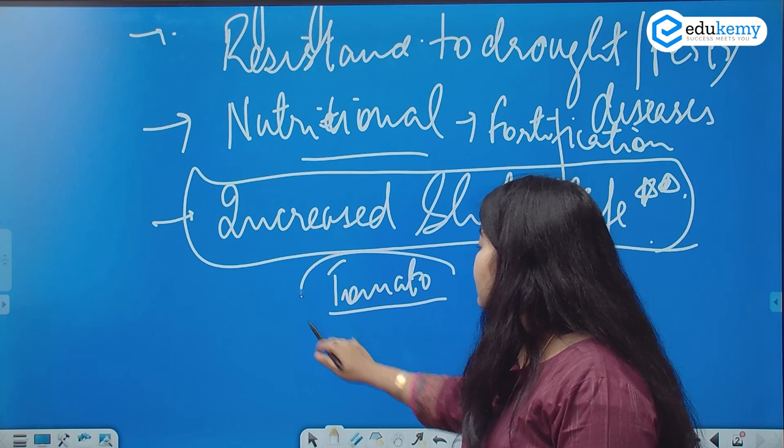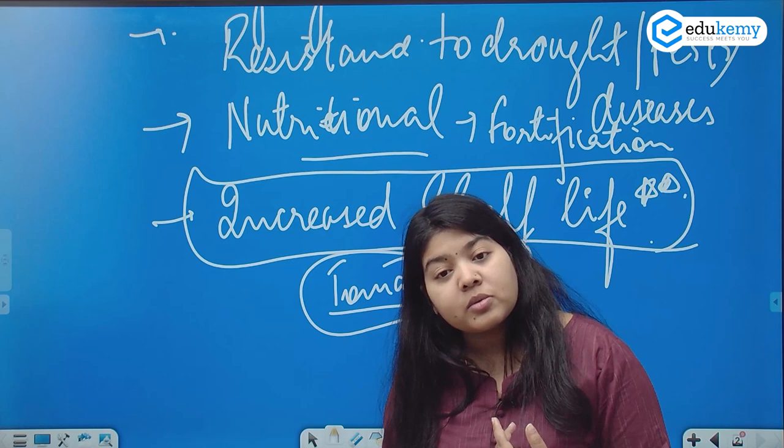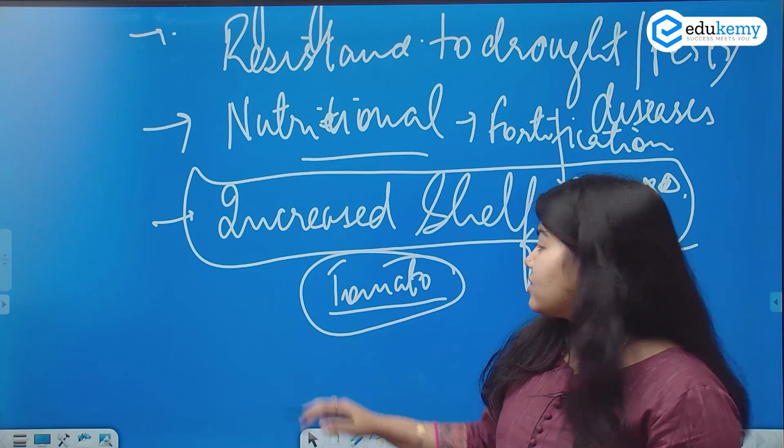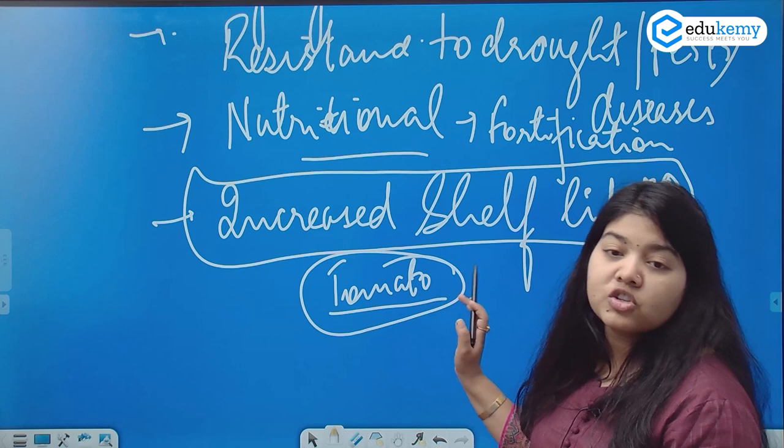Tomato is extremely perishable and has no further use — potato and beetroot can be used for making sugar, wine, beer, etc. But tomato literally has no other use. So the first genetically modified crop was tomato, developed for increasing shelf life.